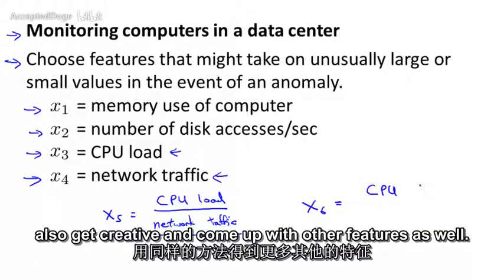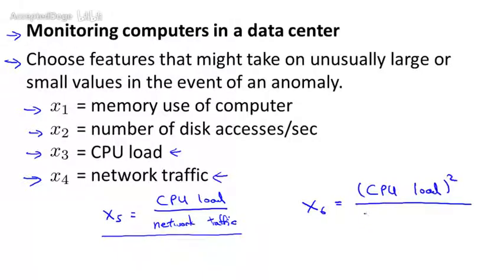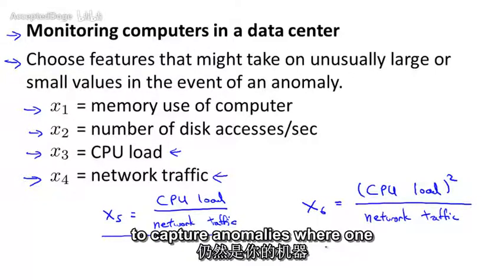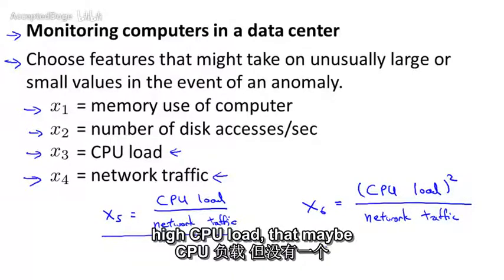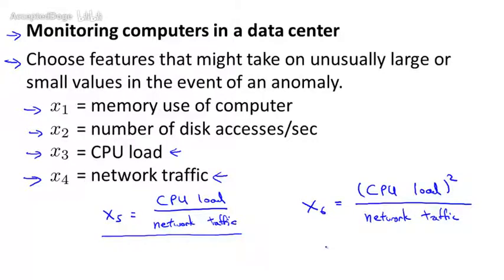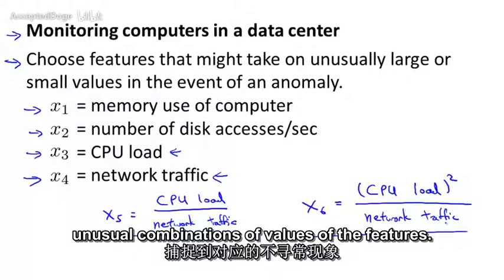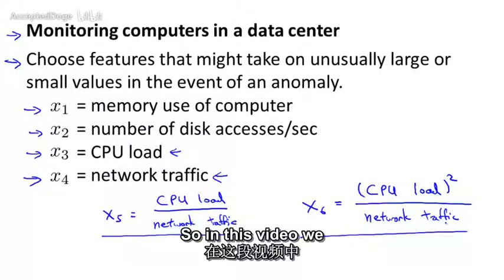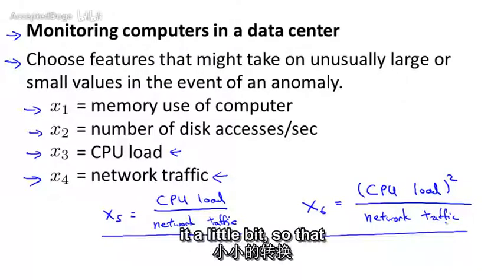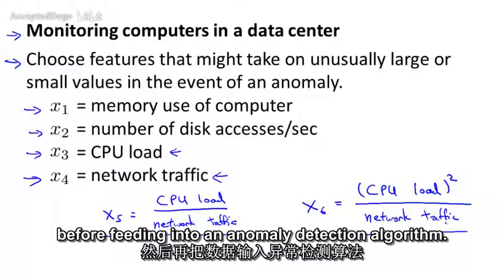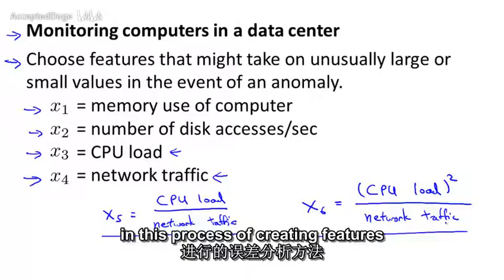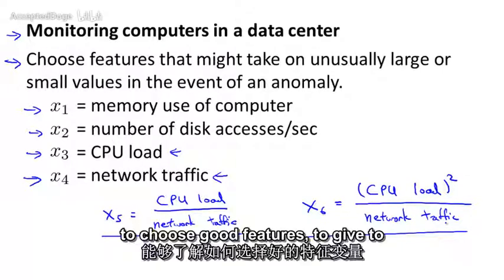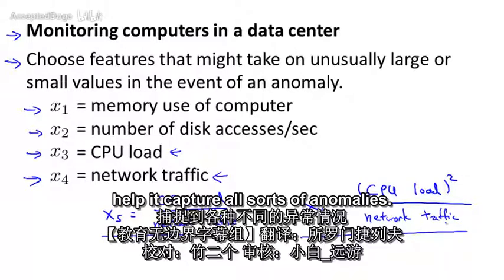You can also get creative with other features. Maybe feature x6 = CPU load^2 / network traffic — another variant to capture anomalies where a machine has very high CPU load but not a commensurately large network traffic. By creating features like these, you can start to capture anomalies that correspond to particular unusual combinations of feature values. To summarize: we talked about transforming features to be more Gaussian, and using error analysis to create features that capture different types of anomalies — hopefully helping you choose good features for your anomaly detection algorithm.